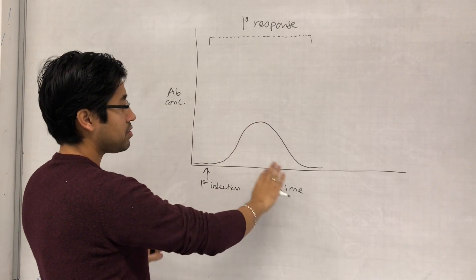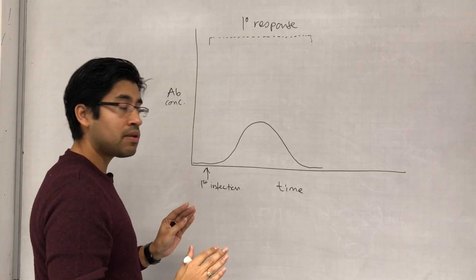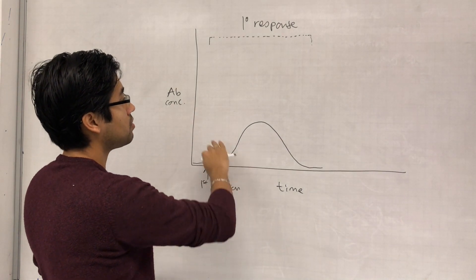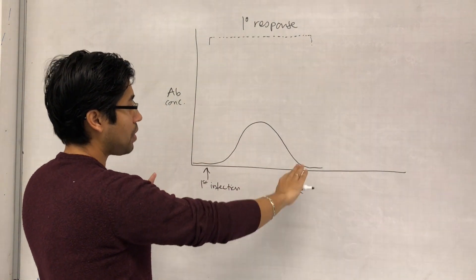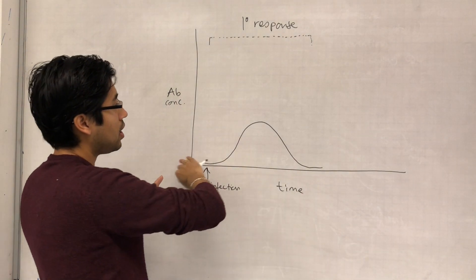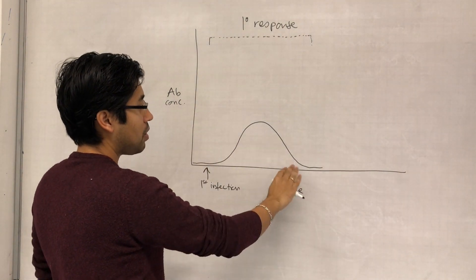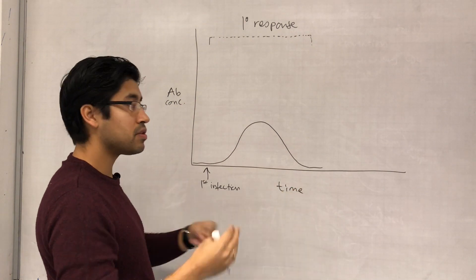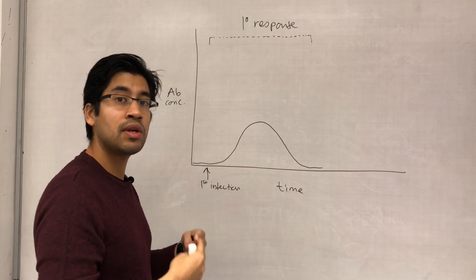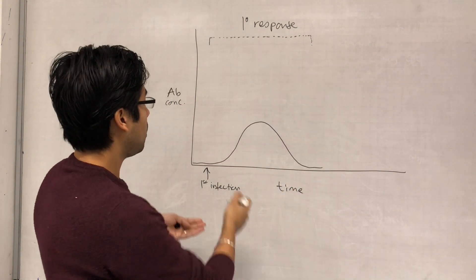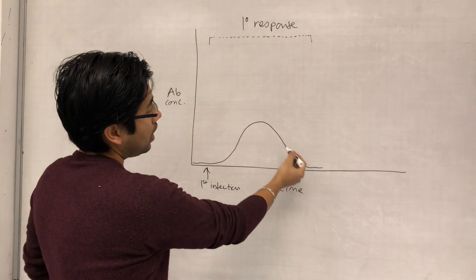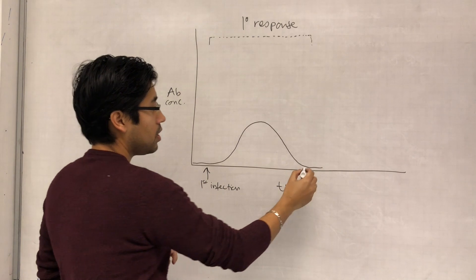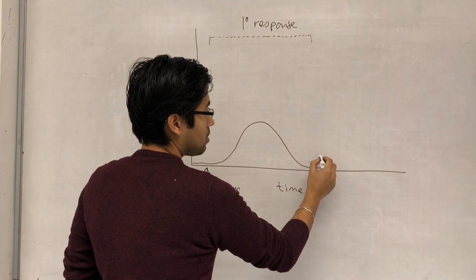Most of those cells are short-lived, so they're around as long as is required to remove the pathogen from the body. However, after a certain amount of time, the antibody levels go down because the proteins get degraded - they don't stay there forever. So we see the antibody concentration decline.